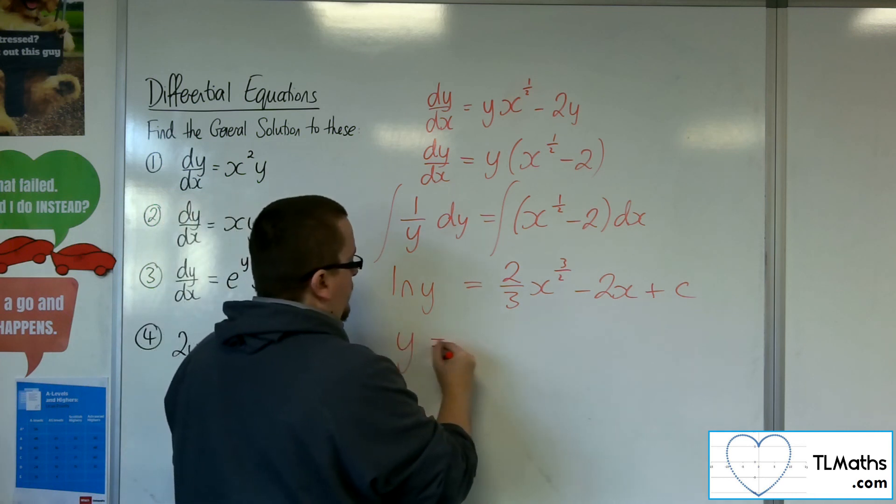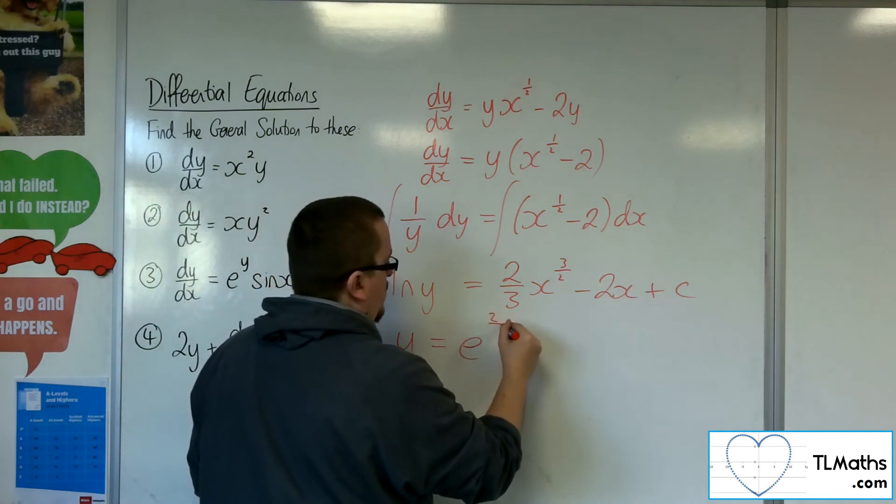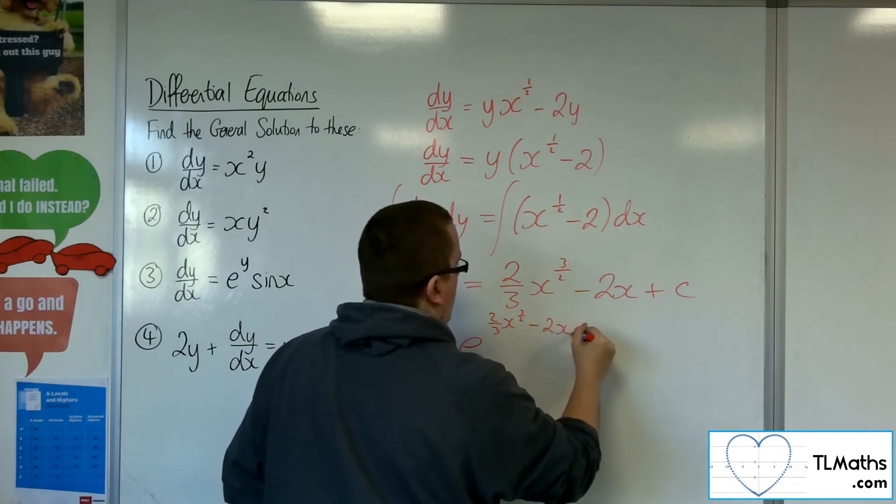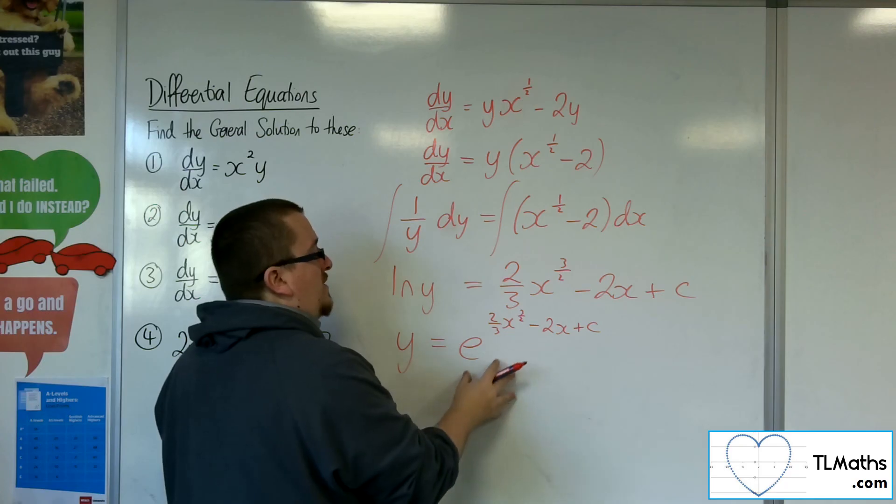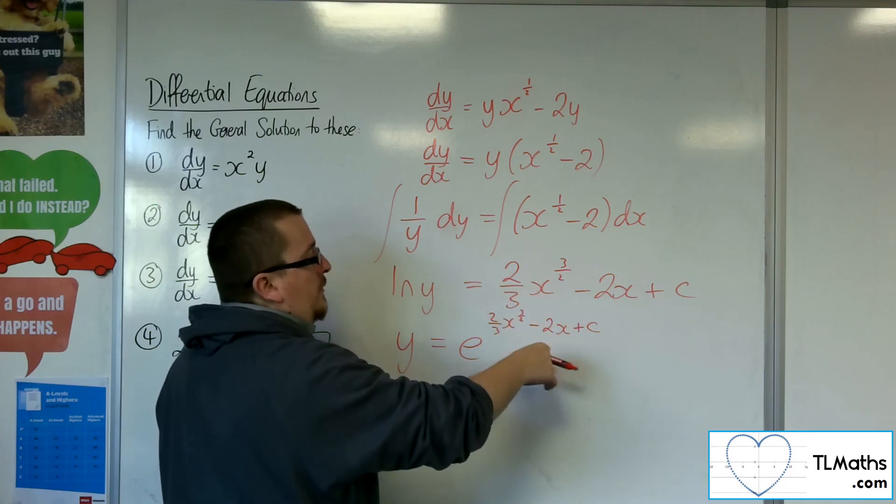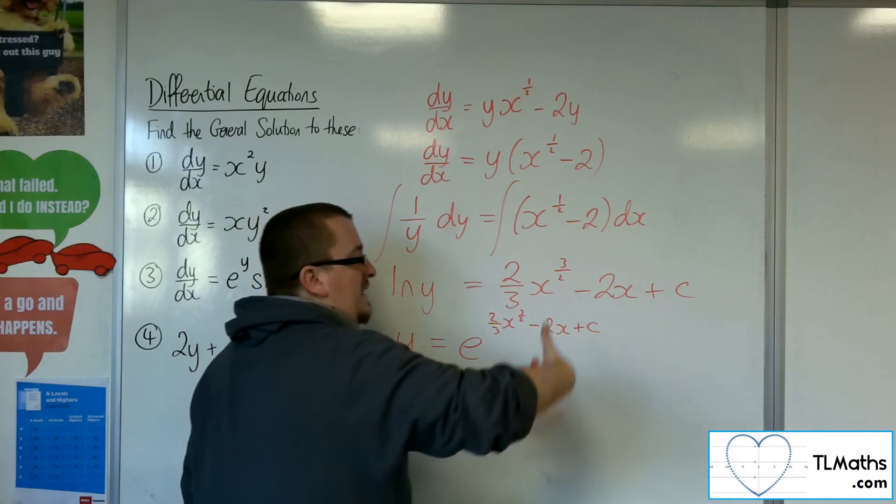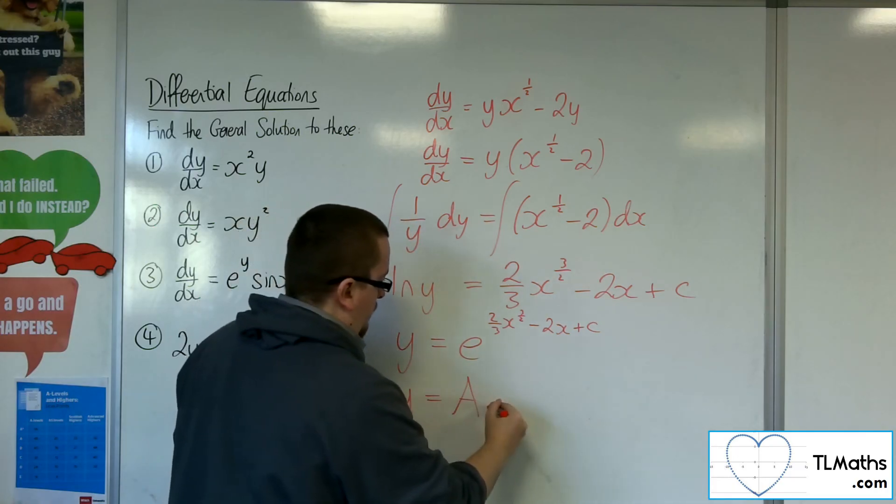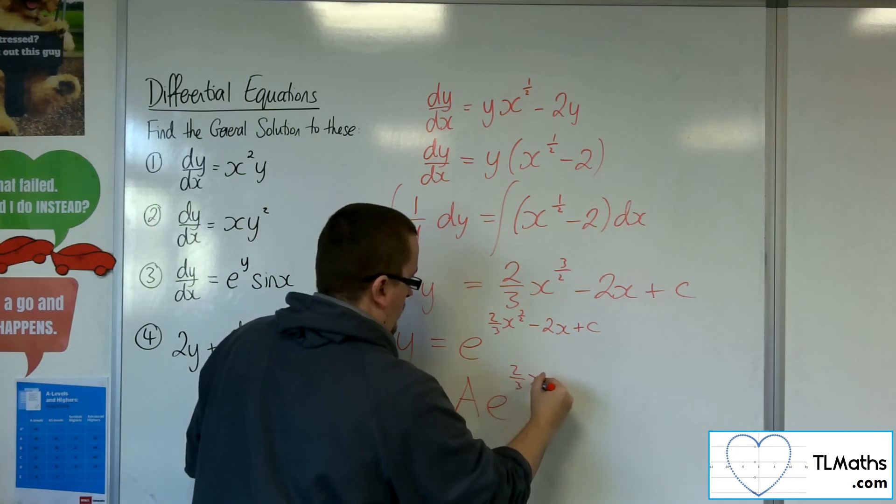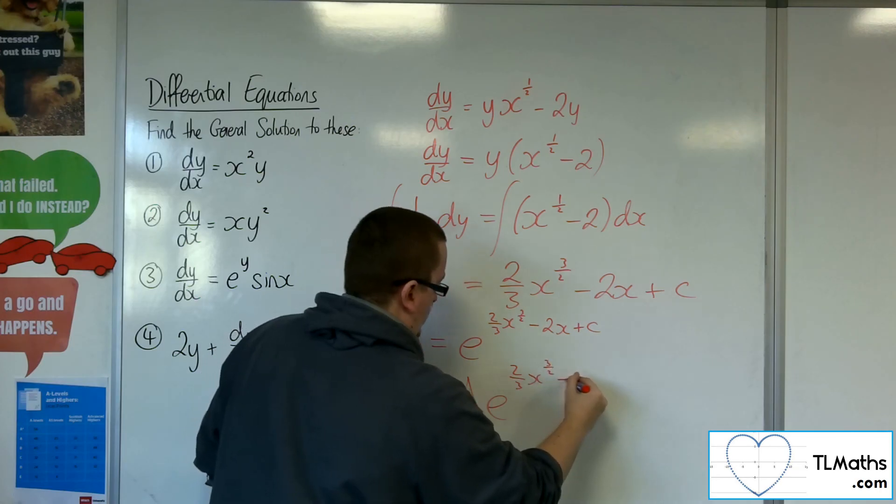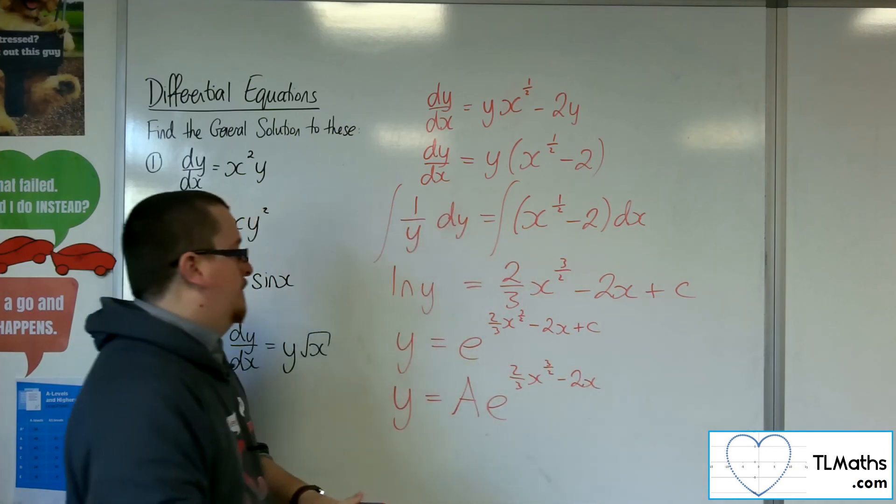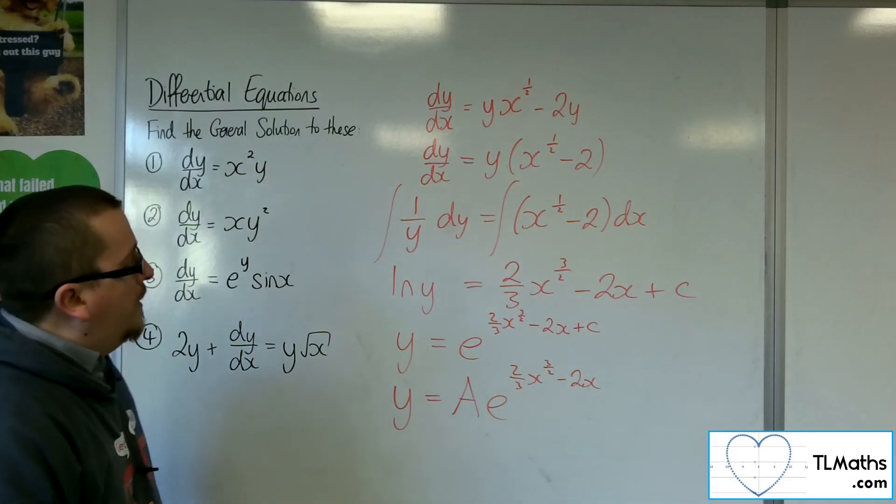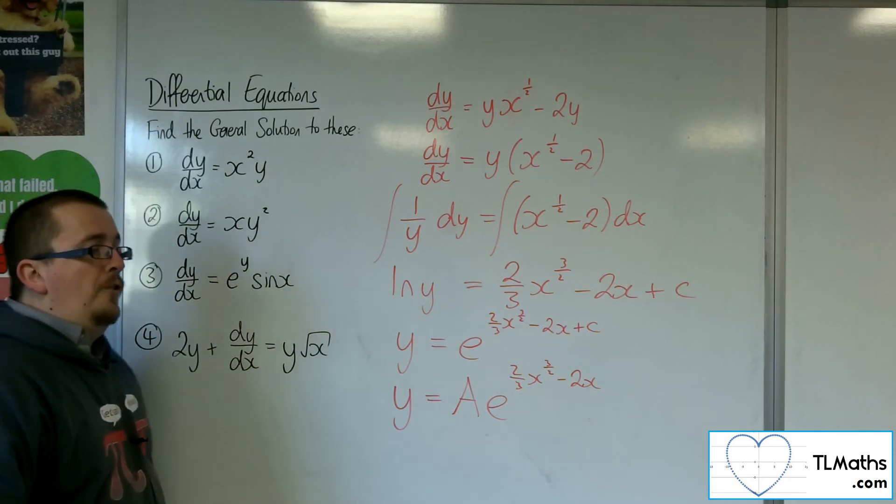So y will be equal to e to the 2 thirds x to the 3 halves minus 2x plus c. Now that's e to the 2 thirds x to the 3 halves, take away 2x, times e to the c. The e to the c can just be represented as a. And so that is a simplified version of the general solution for number 4.